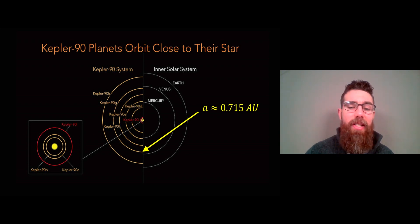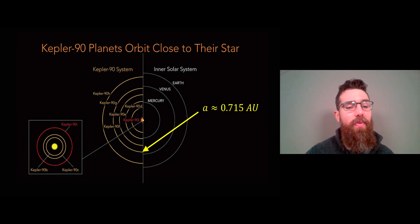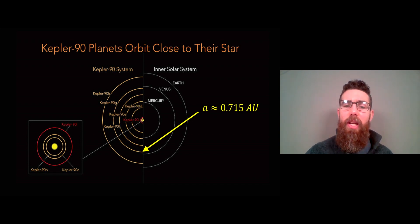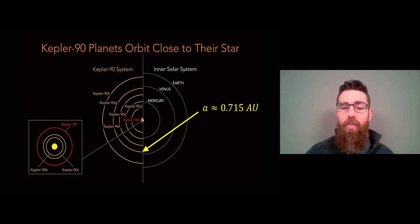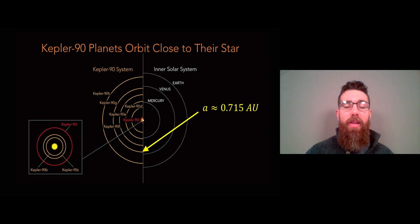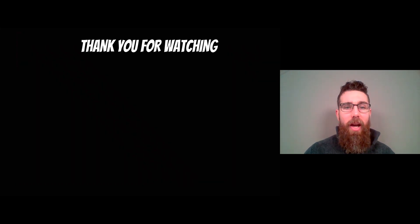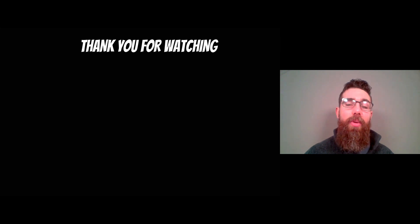That's just inside the orbit of Venus as a comparison, so it's fairly close to its star. It's also a fairly large planet, so this would be a fairly warm gas giant. Thank you for watching — you can also check out some of the other videos where we calculate other properties of exoplanets.